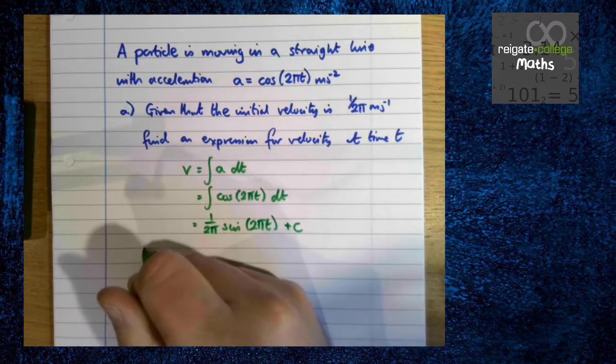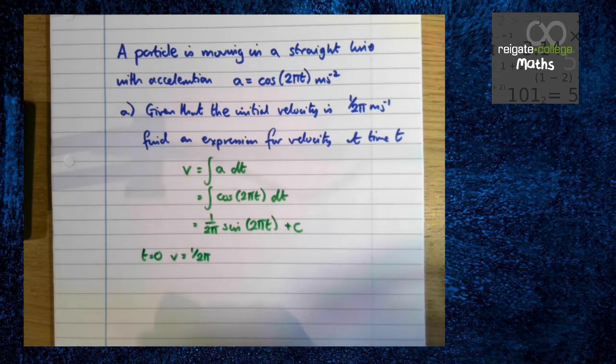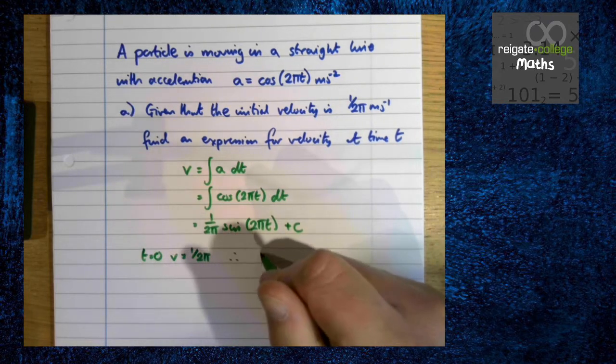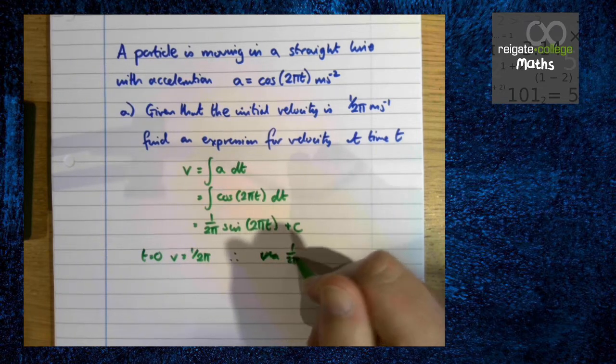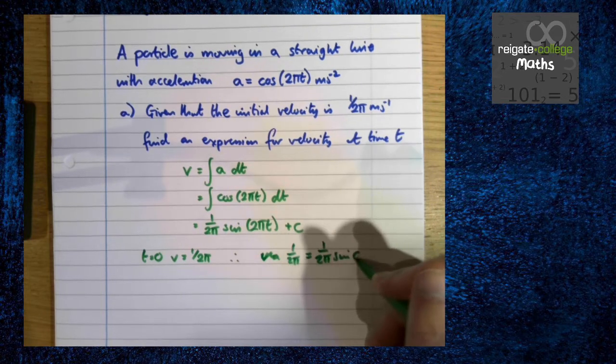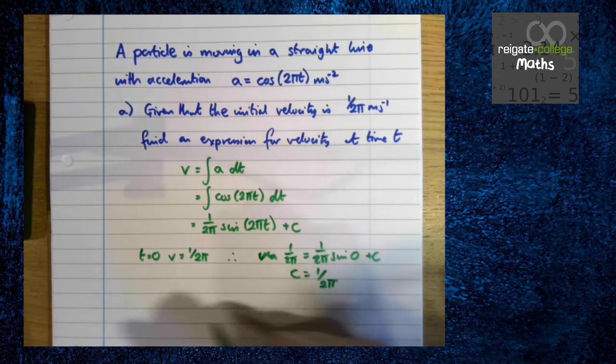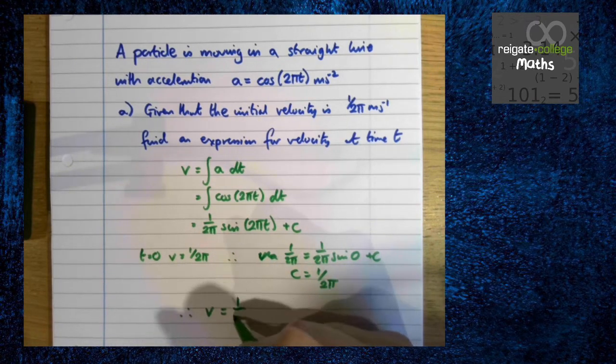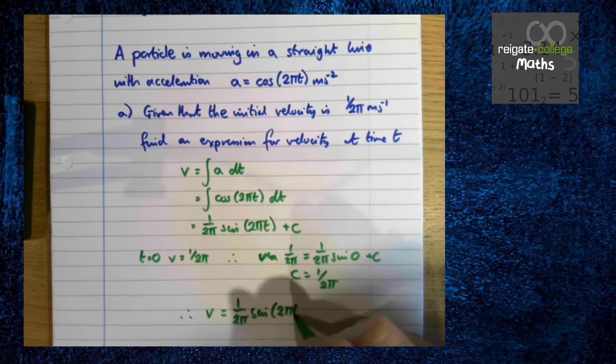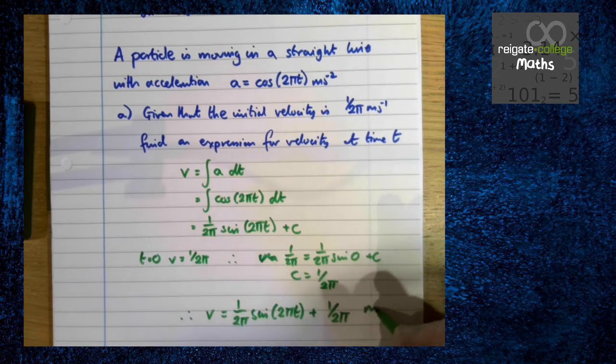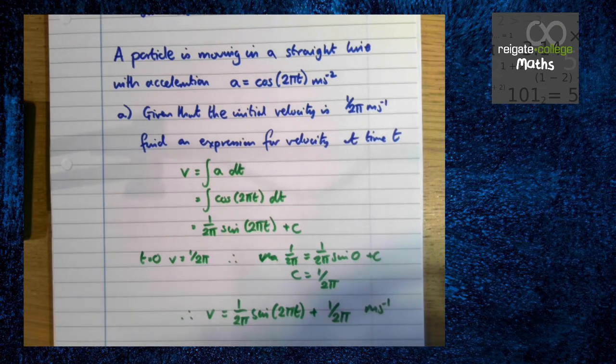We know that when t is 0 v is 1 over 2π because we're told that which means that 1 over 2π is equal to 1 over 2π sine 0 which is 0 plus c. C is 1 over 2π so therefore v is 1 over 2π sine 2πt plus 1 over 2π meters per second. So in its essence this is just an integration question it's nothing beyond that it's just given in a very wordy way. So if you can do reverse chain rule or integration by parts if necessary this is just an integration or differentiation question. But that's all these questions are.